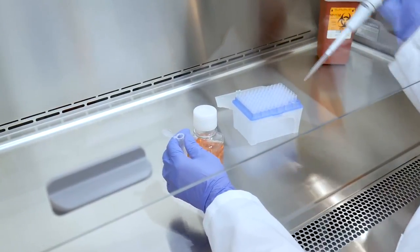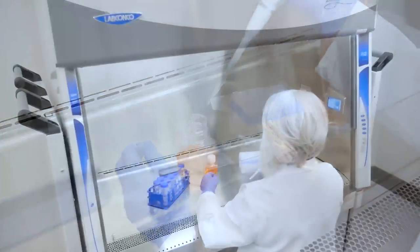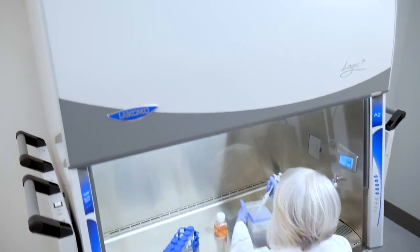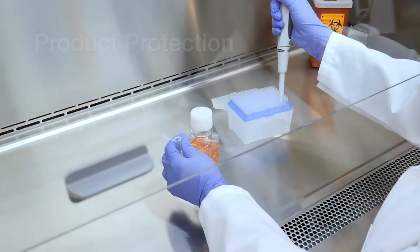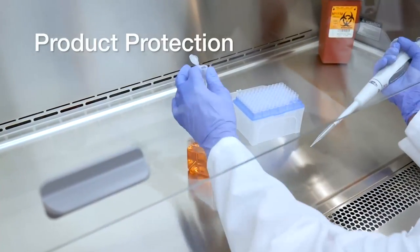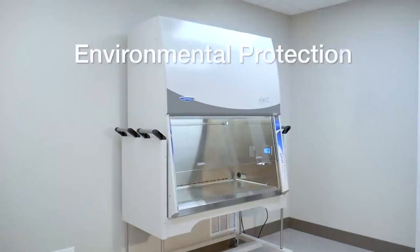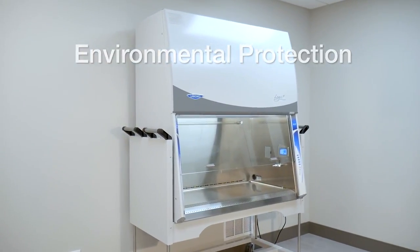Next, contaminated air captured from the cabinet interior and room is filtered and then recirculated or exhausted to the room. Any contaminants are filtered providing product protection when recirculated and environmental protection when exhausted out of the cabinet.